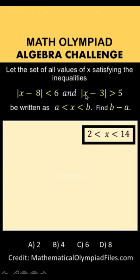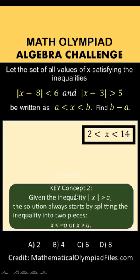Now let's deal with |x - 3| > 5. For that, we'll use key concept 2. If we have an inequality |X| > a, the solution always starts by splitting into two pieces: X < -a or X > a.